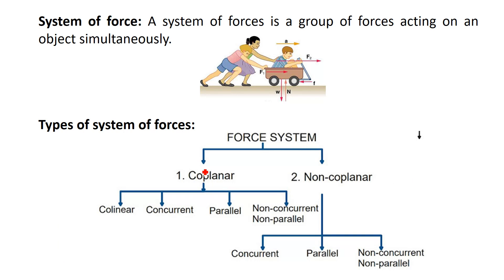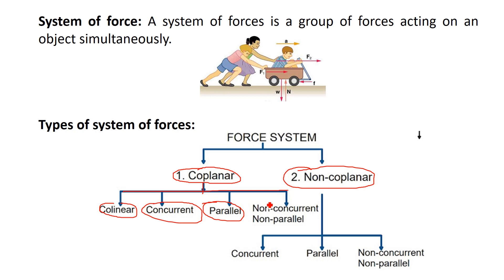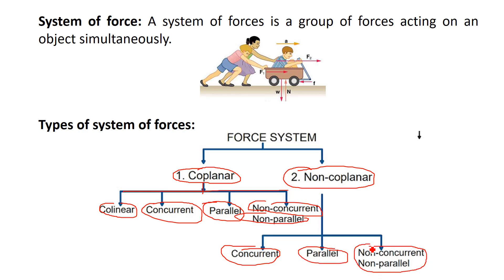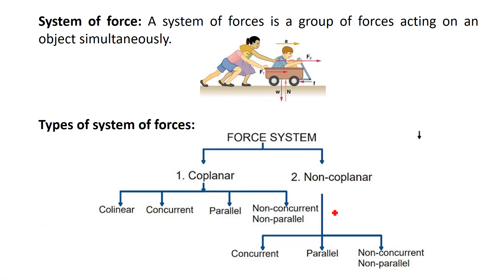System of force is mainly divided into two types: coplanar force system and non-coplanar force system. Under coplanar force system there are subtypes: collinear force system, concurrent force system, parallel force system, and non-concurrent non-parallel force system. Under non-coplanar force system there is also concurrent, parallel, and non-concurrent non-parallel force system.